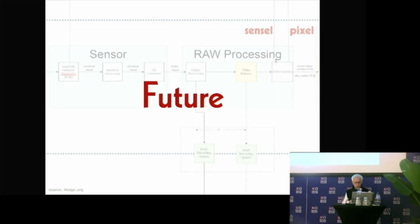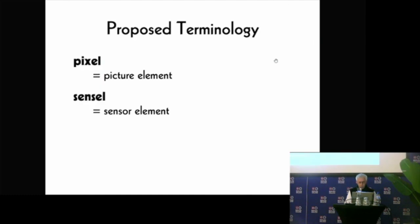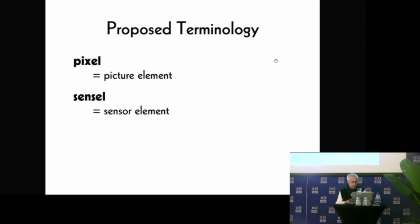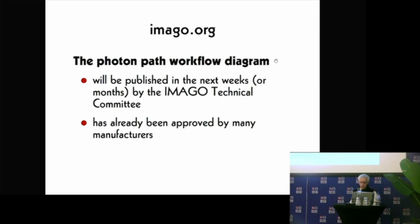Now let's take a look at the future. In my opinion it's important to ask and answer two questions. The first one is: what exactly does the sensor do, and how exactly are the so-called raw data processed? The proposed terminology to address this is to use the word 'pixel' for picture element — as we know — but to use the word 'sensel' for sensor element. This has been proposed by Charles Poynton a month ago at the conference Colouring Film in Bern, Switzerland, and I presented it at the YASA conference in Mexico and to my students in Donostia. This is unpublished work by the Imago technical committee.